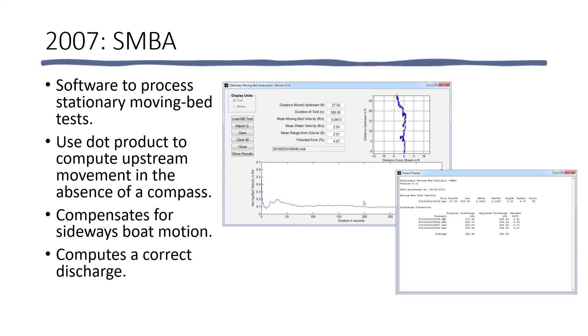In 2007, after the introduction of the StreamPro ADCP, which had no compass by default, we observed that there is a false upstream movement when making a stationary moving bed test with a StreamPro, particularly if it's off the end of a tether and it is allowed to swim back and forth at the end of the tether. This motion of going back and forth with no compass results in a false upstream moving bed. So we created SMBA, a software to process the stationary moving bed test, and it uses the DOT product to compute an upstream movement in the absence of a compass. It compensates for the sideways boat motion, and actually then, if there is a moving bed, will apply a correction and give you a corrected discharge.